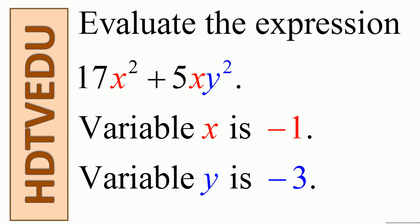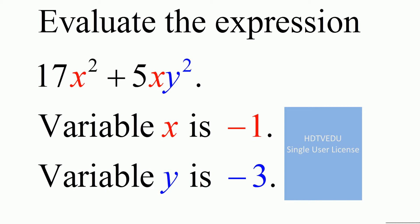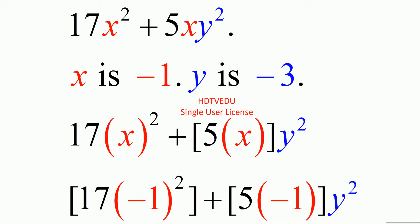Evaluate the expression 17x squared plus 5xy squared, where variable x is negative 1 and variable y is negative 3. First we substitute for x, keeping y as it is, then we substitute for y.